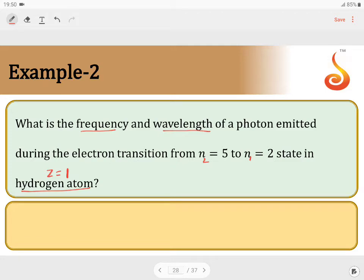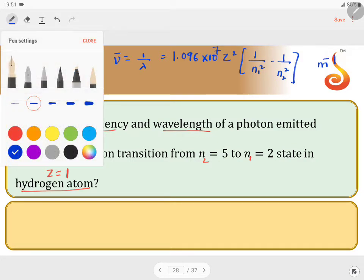Either you can calculate energy difference using Bohr's model or we can write nu bar equals 1 by lambda into R. R is 1.096 times 10 to the power 7 into z squared, 1 by n1 squared minus 1 by n2 squared. The unit will be per meter SI unit.